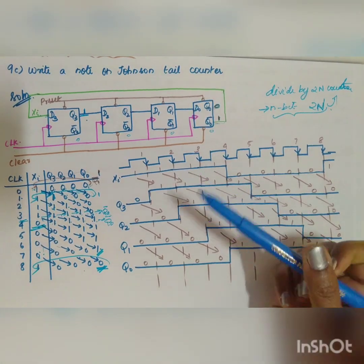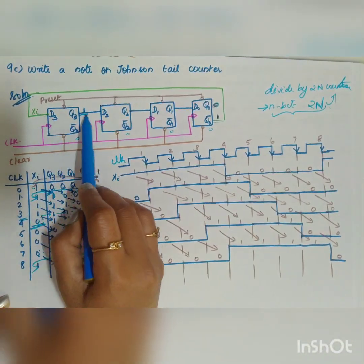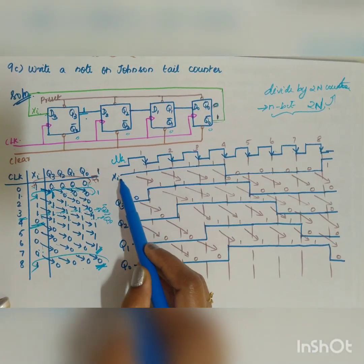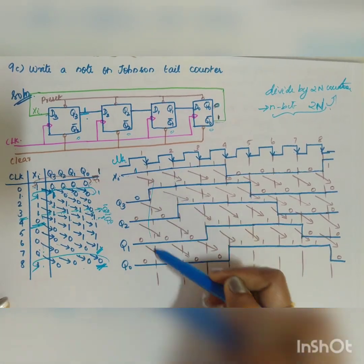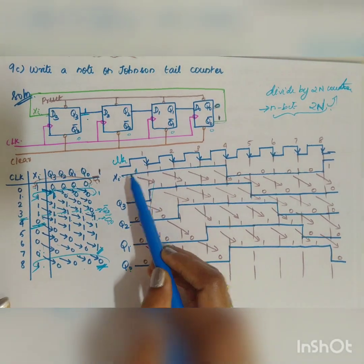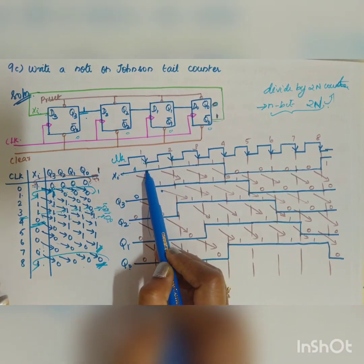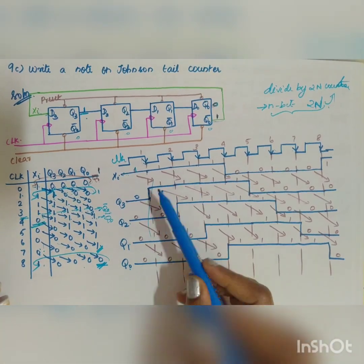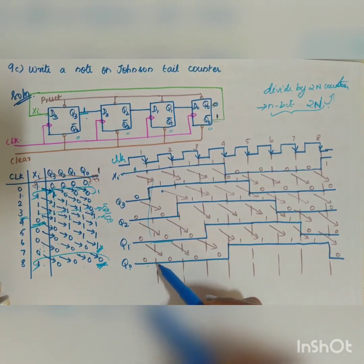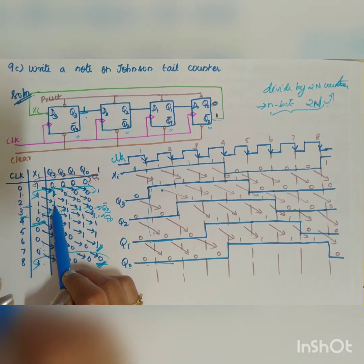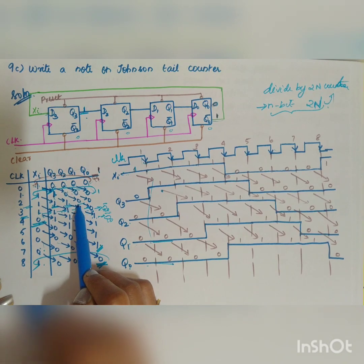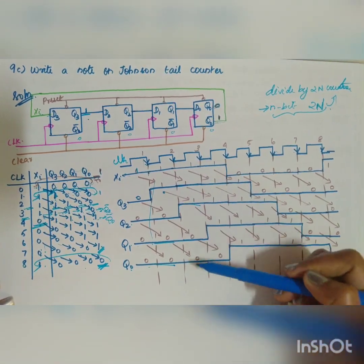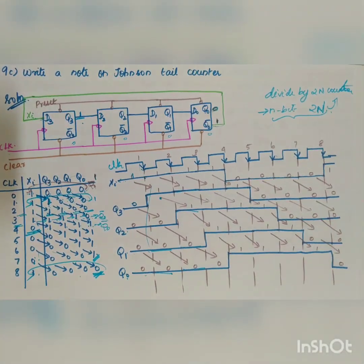Now looking at the timing diagram: this is the clock signal. Since there is a bubble on the clock, it is a negative-triggering clock. So we have clock pulses 1 through 8. Taking Xi as reference, in the first clock pulse Q3 goes to 1 while Q2, Q1, Q0 remain 0. In the second clock pulse Q3 is 1, Q2 is 1, Q1 and Q0 are 0 — giving 1100. This is how you fill in the timing diagram.